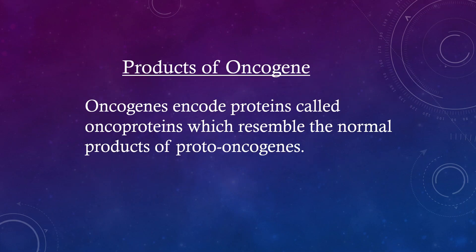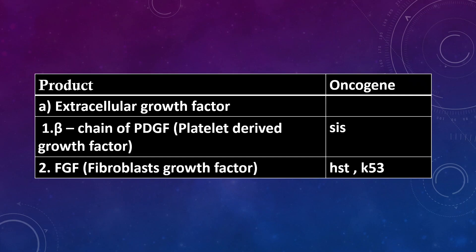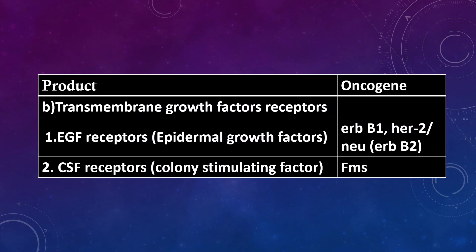Products of oncogene: Oncogenes encode proteins called oncoproteins which resemble the normal products of proto-oncogenes. Extracellular growth factors: 1. Beta chain of PDGF, i.e., platelet-derived growth factor — oncogene is SIS. 2. FGF, fibroblast growth factor — oncogene is HSTK53.